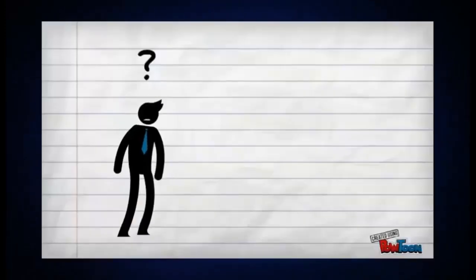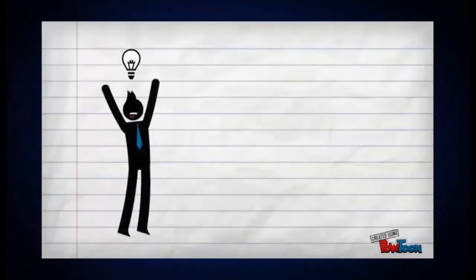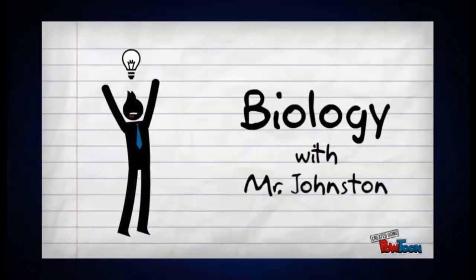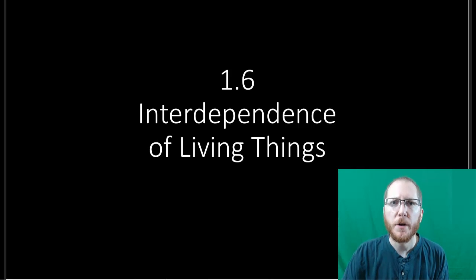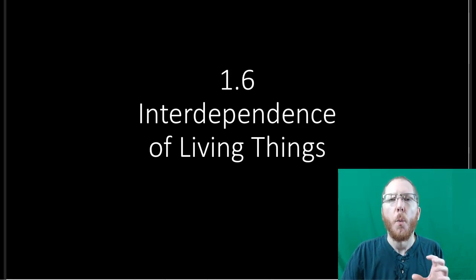Hello, I'm Mr. Johnston, and this is Biology. Welcome to the Section 1.6 podcast. In this one we're going to talk about how organisms interact with each other, how organisms interact with their environment, and why it's so critical, as we can see here with the interdependence idea, why it's so critical that they do so so that they can live.